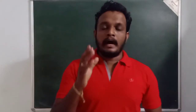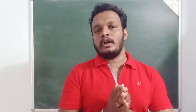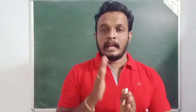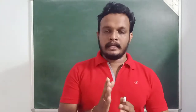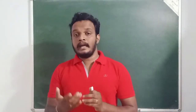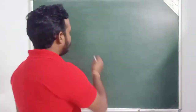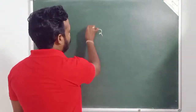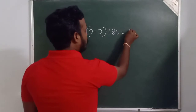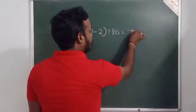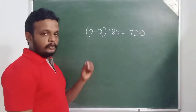So for the other problem, the other equation is n-2 into 180. The second answer is 720. The second equation is n-2 equals 720 divided by 180.